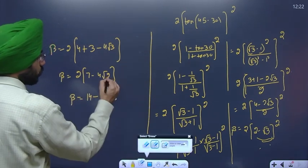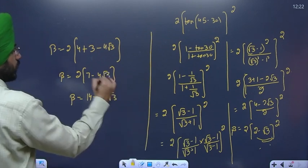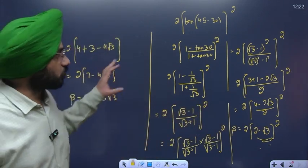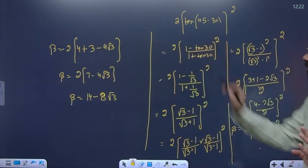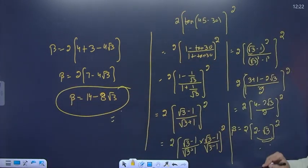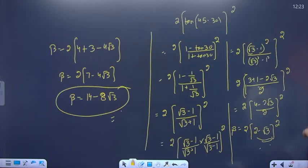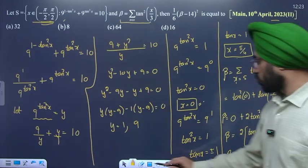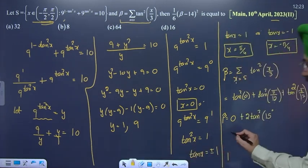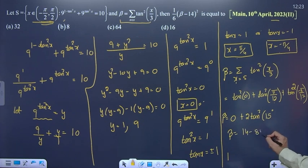Value of beta ho jaayegi 14 - 8√3. Yeh number hai. So beta ki value after simplification hai 14 - 8√3. Ab ise is term ke andar put karo.